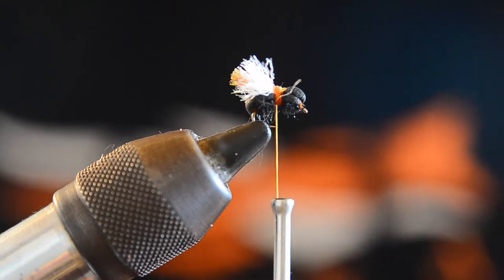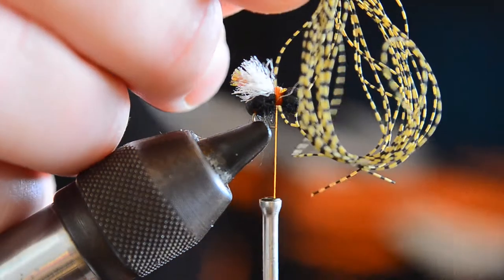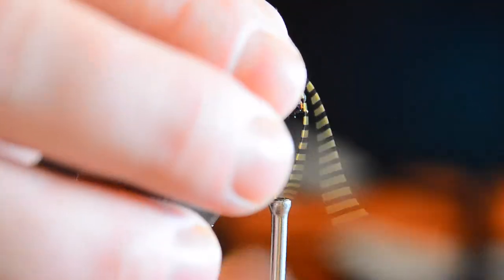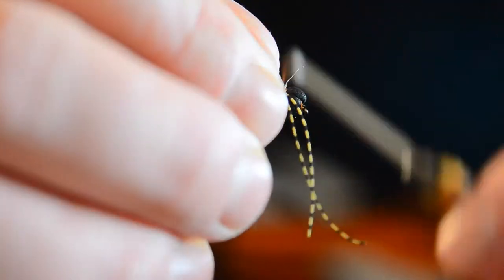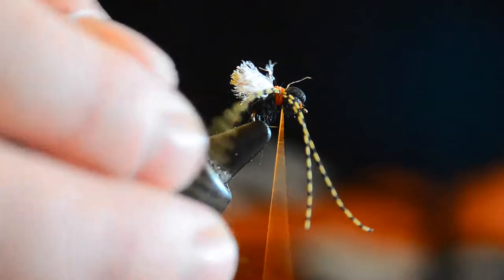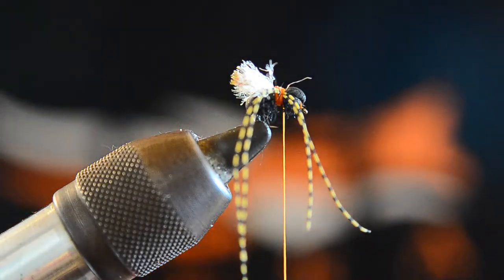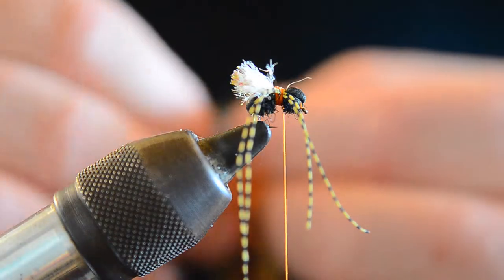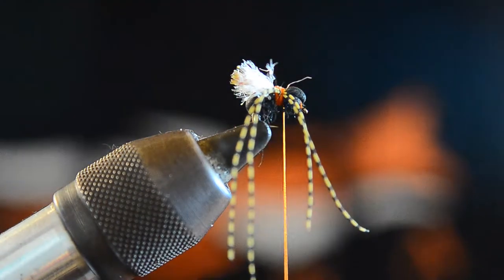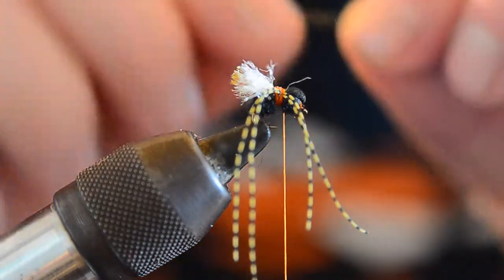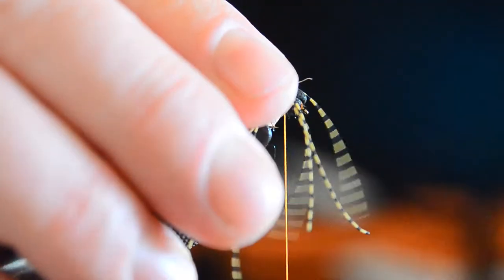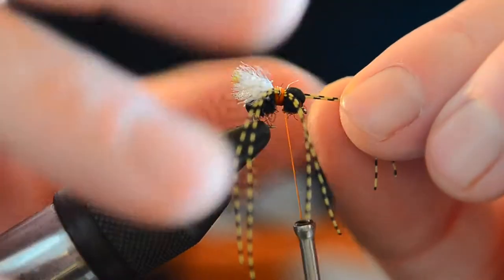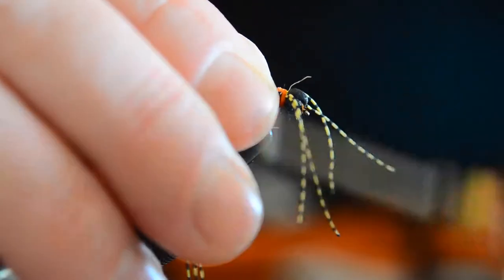For the next step, we're going to use some centipede legs, small, and I'll just do two on each side. These little guys can be kind of unruly at times, but with a little practice you get the hang of it. Cinch those down nice.